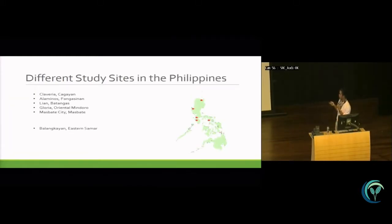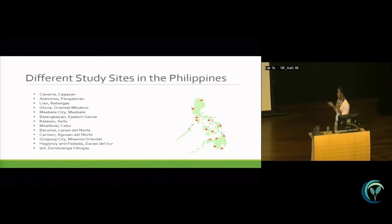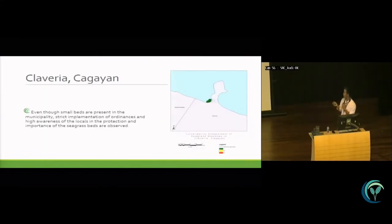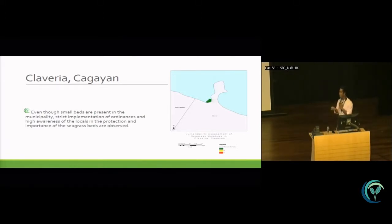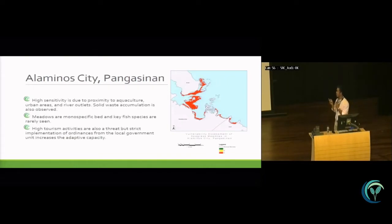These are the different study sites in the Philippines. I'll have a brief discussion on the vulnerability assessment results for each study site and point out what affects the final vulnerability rating. First is Claveria, Cagayan. Even though there's a small patch of seagrass area, it has low vulnerability, which, based on our focus group discussions, is mostly because of strict implementation of ordinances and high community awareness of the importance of seagrass beds.